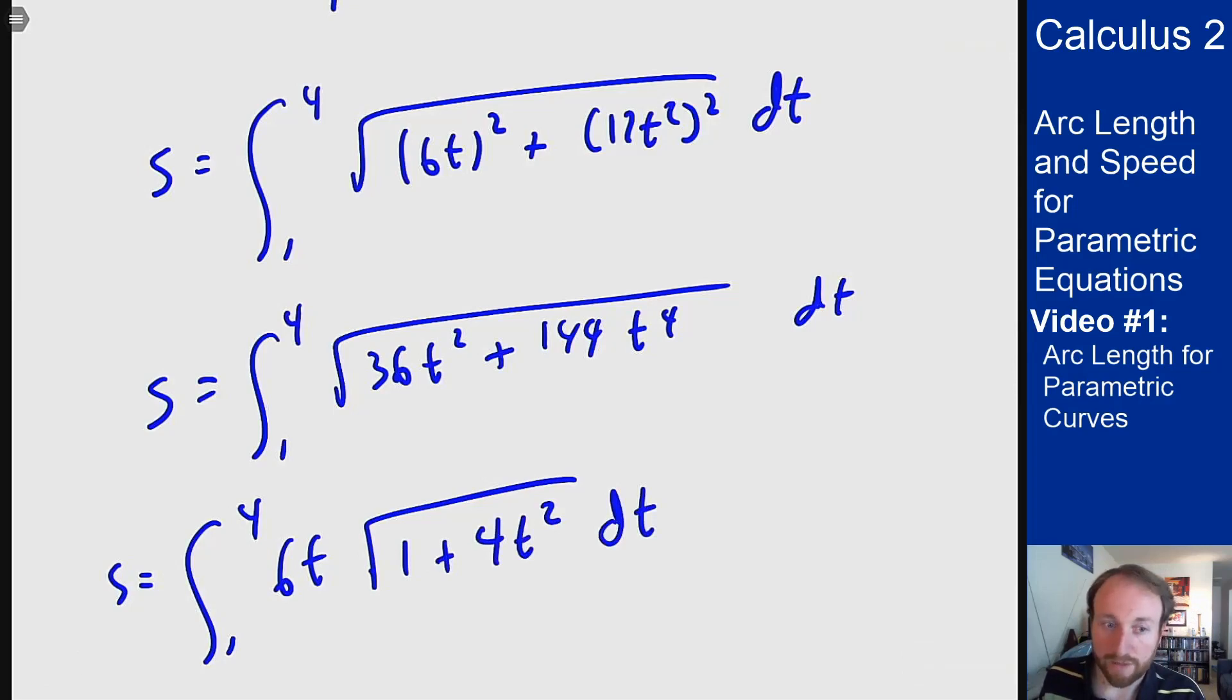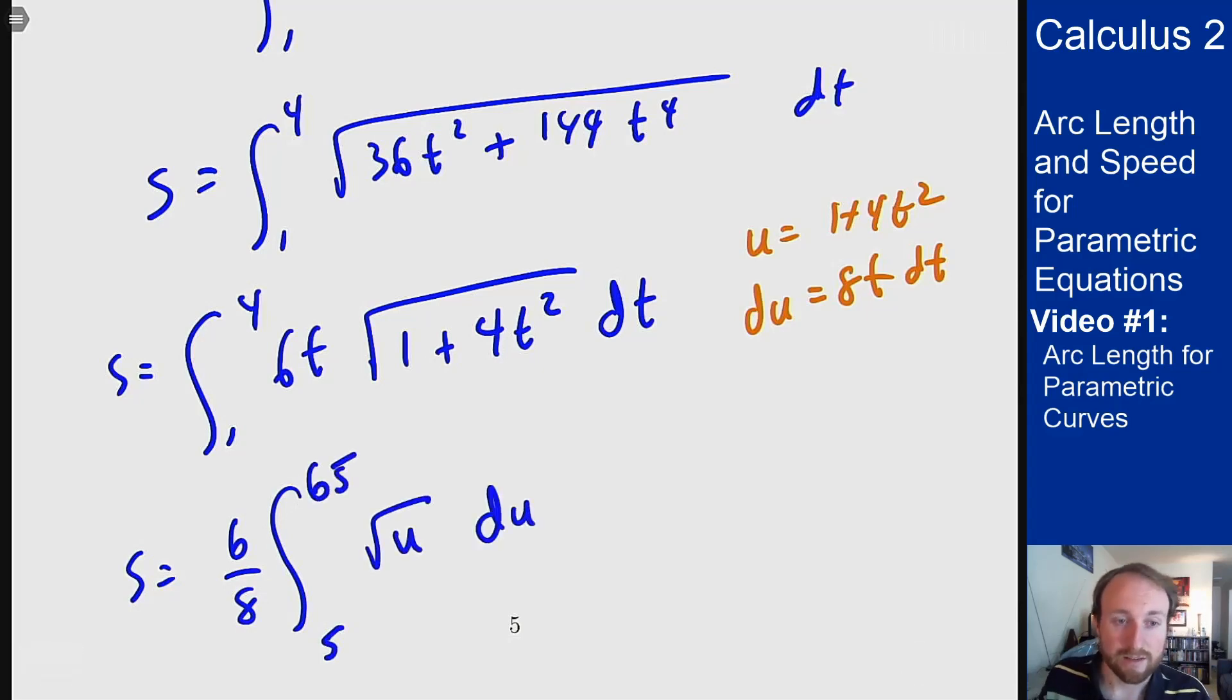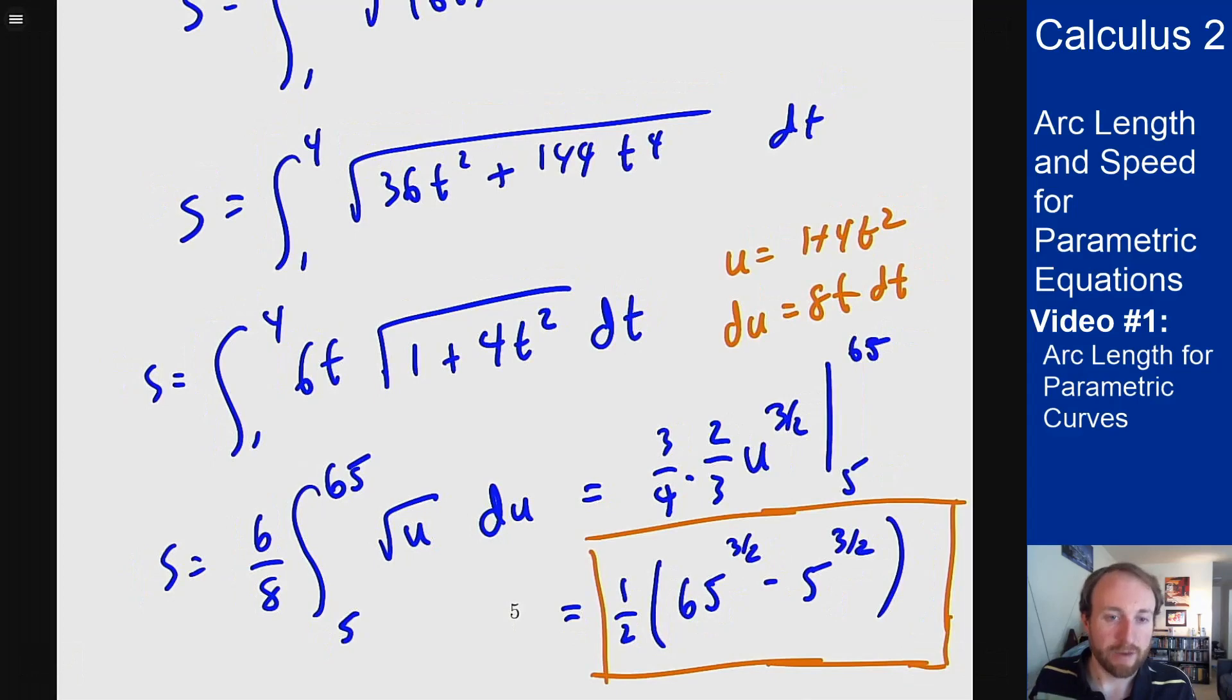There's a radical here but thankfully this works just by u substitution. I can set u to be 1 plus 4t squared. du is then 8t dt. What I'll see out of that is a 6 over 8 integral from 5 up to 65, square root of u du. 6 over 8 comes from the 8 in the du and the 6 out front of the equation and I can integrate this and solve. Which I'm plugging in my endpoints gives 65 to three halves minus 5 to three halves times one half as the length of this curve. So that's the idea of arc length for parametric curves.